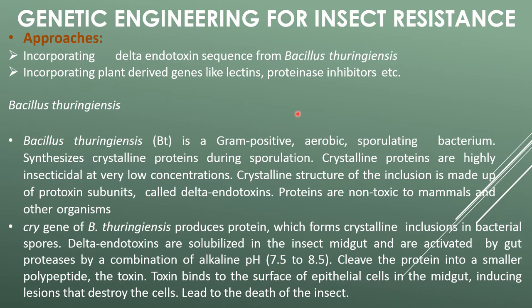The crystalline structure of the inclusion is made up of a prototoxin subunit called delta endotoxin. The proteins are non-toxic to mammals and other animals. The cry gene of Bacillus thuringiensis produces protein which forms crystalline inclusions in bacterial spores.